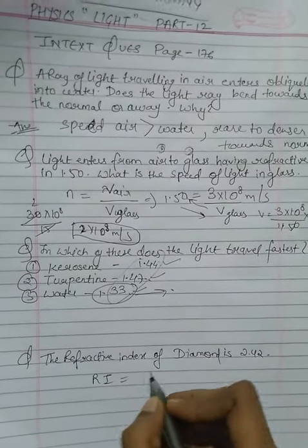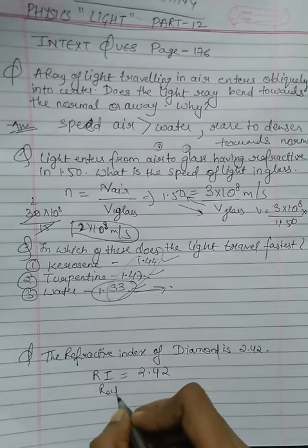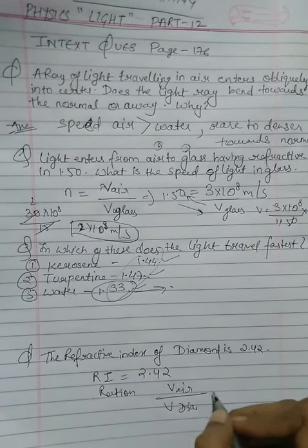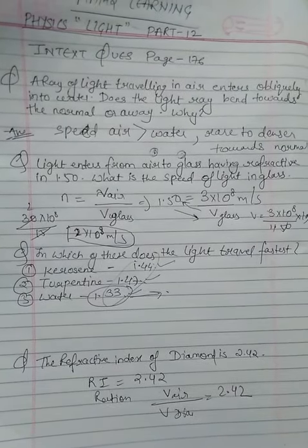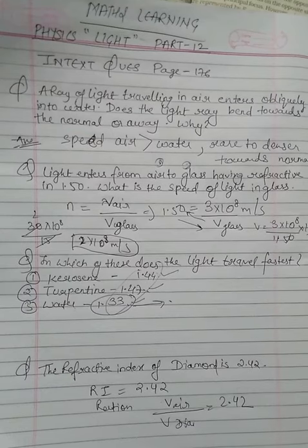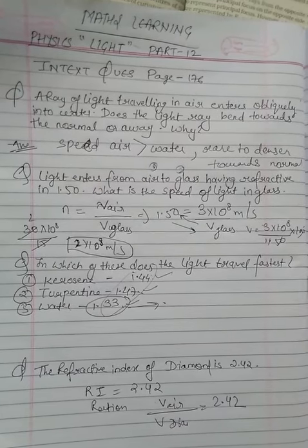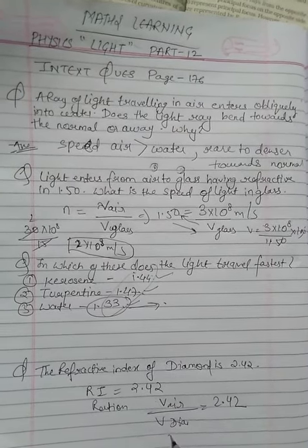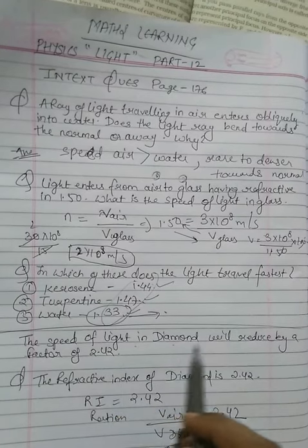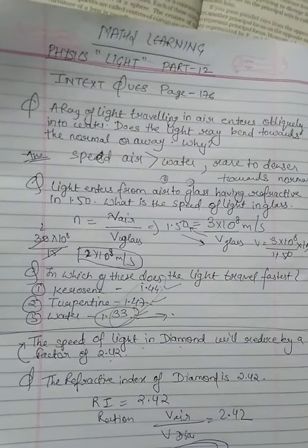Looking at the refractive index of diamond, which is 2.42: this means the ratio of the speed of light in air to the speed of light in diamond is 2.42. So when light enters diamond, its speed reduces by a factor of 2.42 compared to the speed of light in air. This is the answer. We will see you in the next video, bye.